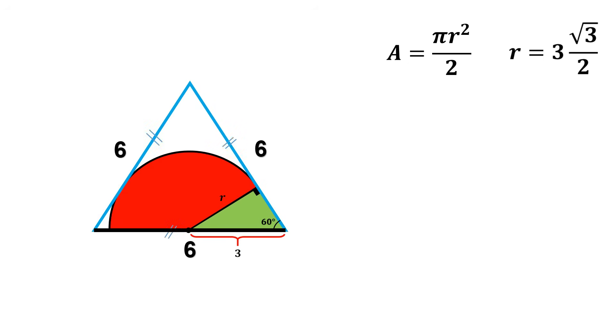Perfect. Now that we have the radius, all we need to do is plug it into the area formula for a semicircle and simplify. And once everything is reduced, the final result comes out beautifully. A equals 27 times pi over 8. Just like that.